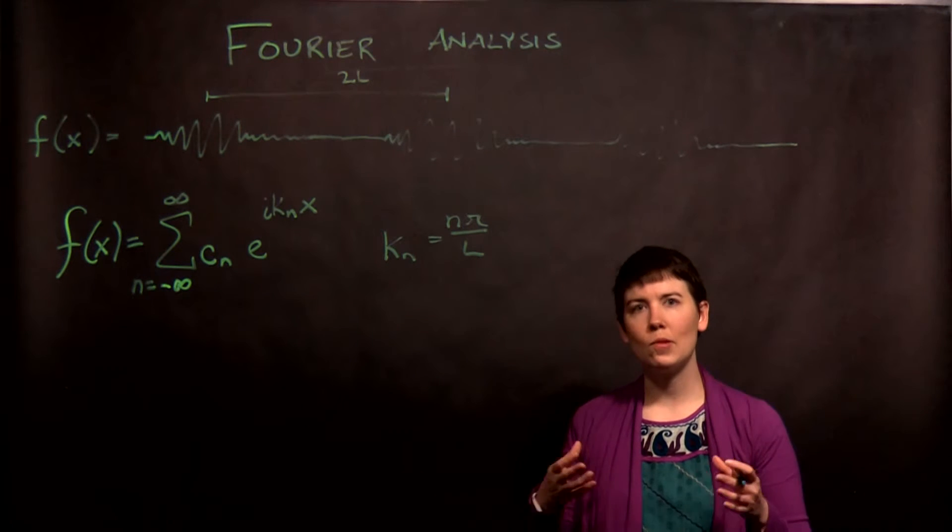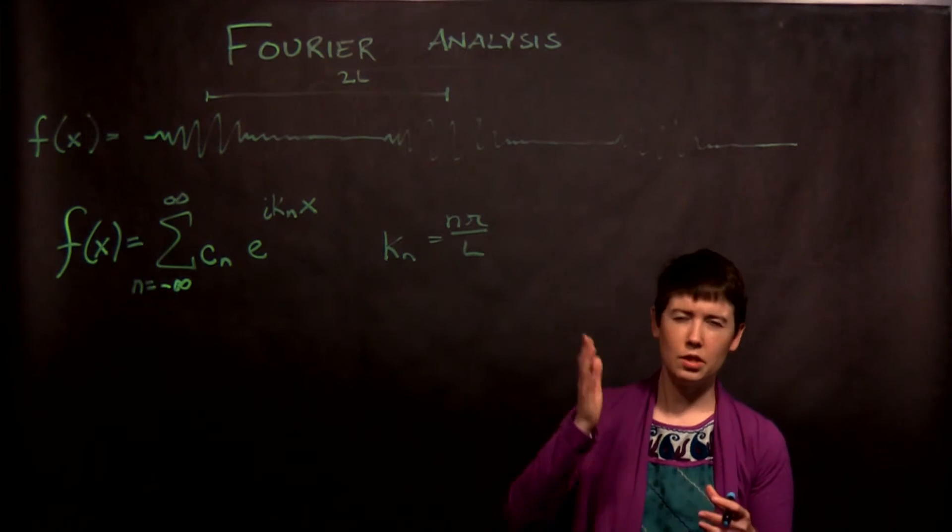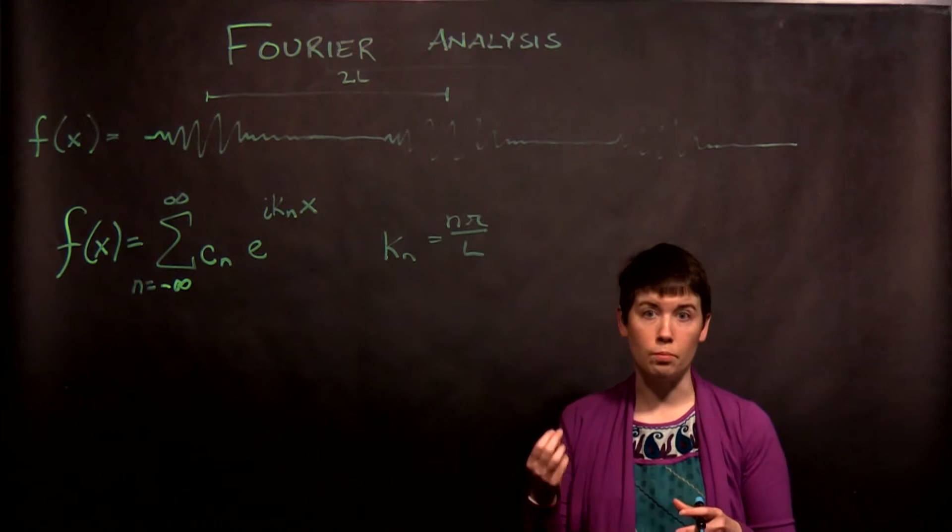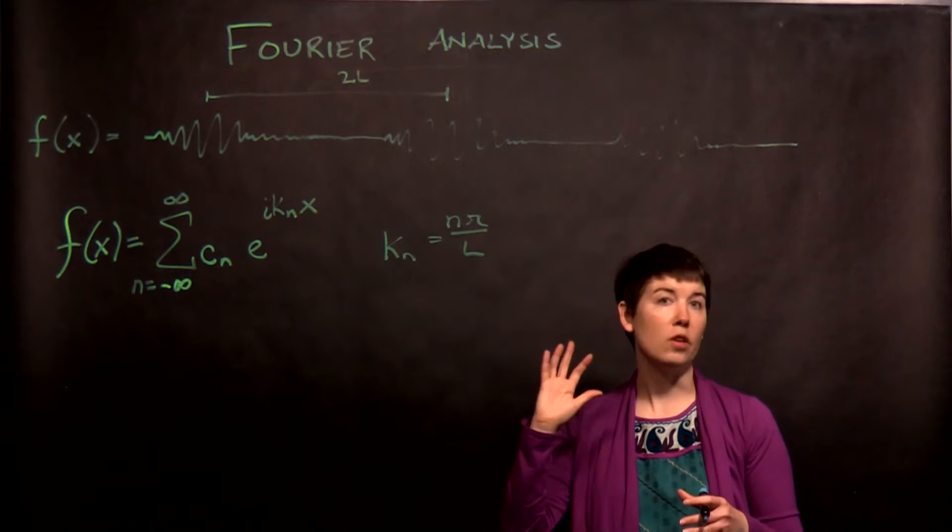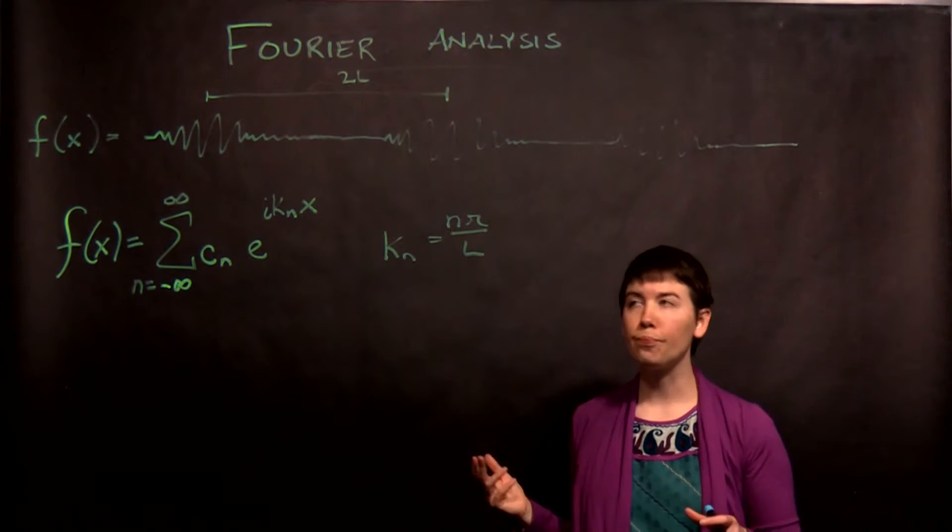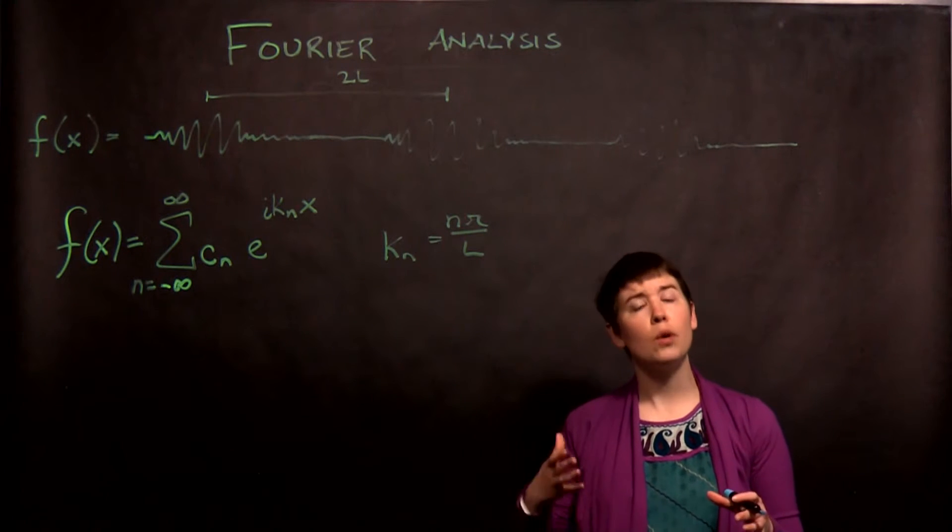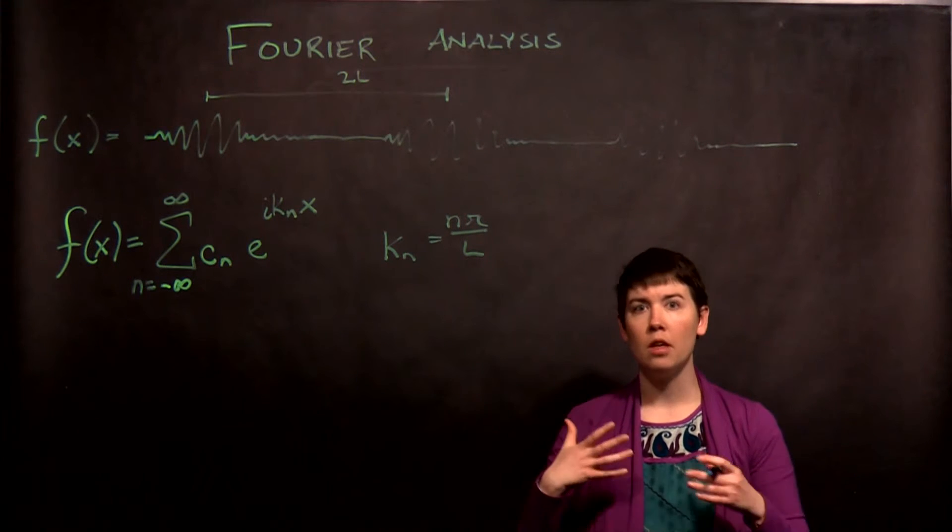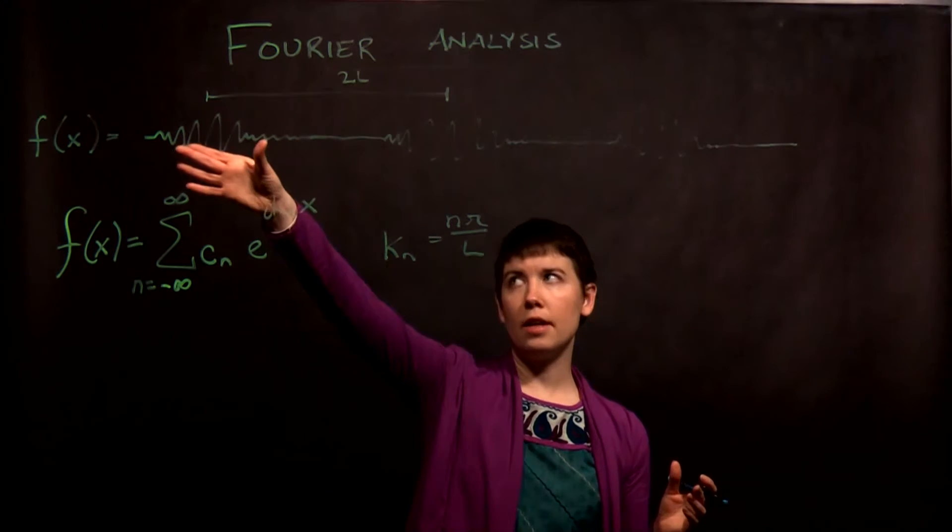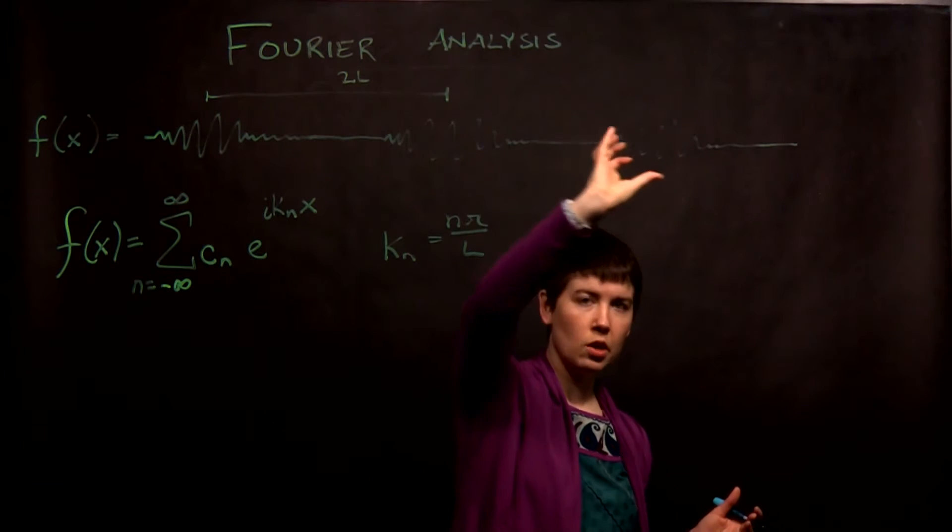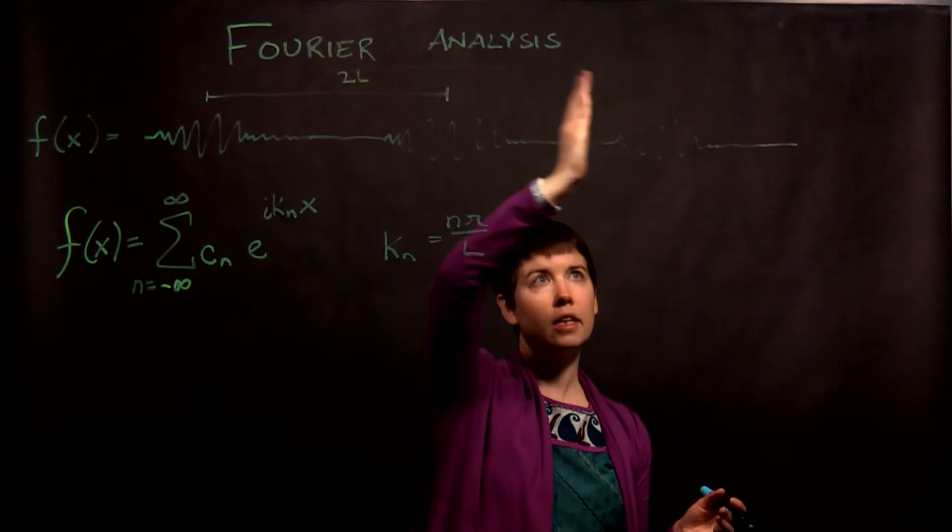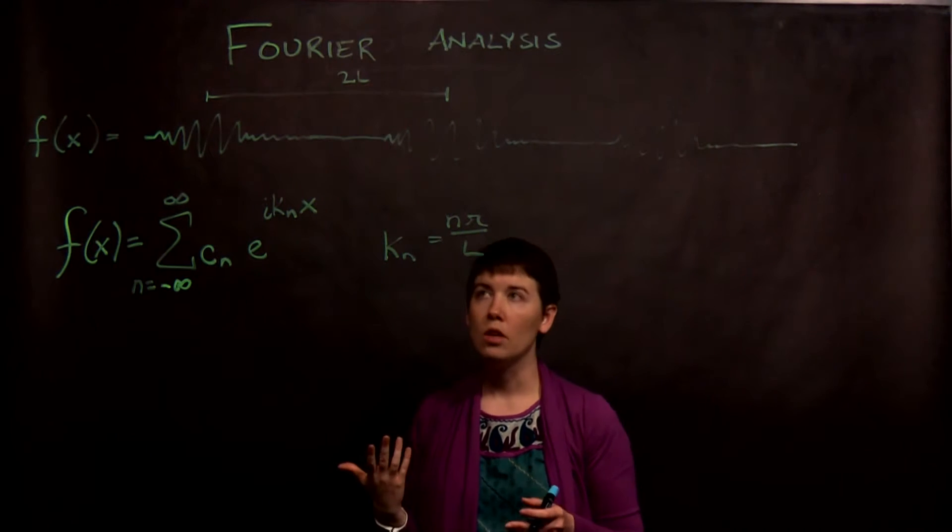Fourier analysis is saying that you can take any sort of repeating signal in space or time, and you can actually break it into components that each have an individual frequency, if it's in time, or in this case an individual wave number. One key thing to know is that we are assuming that this is something that is periodic in some way. So here I've shown it as kind of this little burst - we could call this a wave packet if we wanted - and the idea being that the same wave packet is occurring over a distance of 2L.